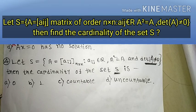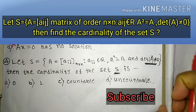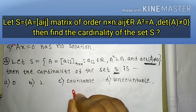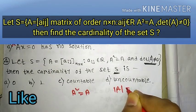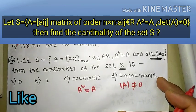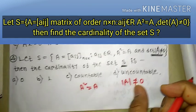Let S be a set of n by n matrices with real entries such that A is idempotent, meaning A squared equals A, and whose determinant is non-zero. Given these conditions, what is the cardinality of the set S?